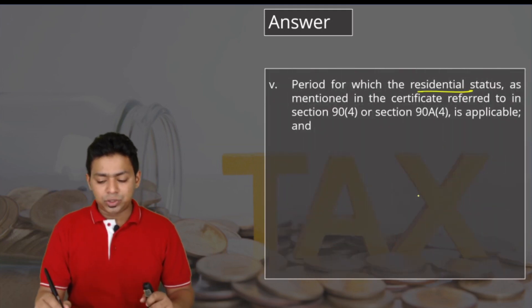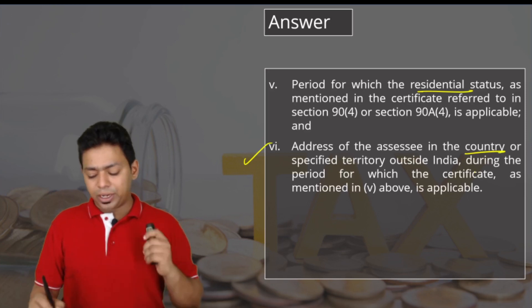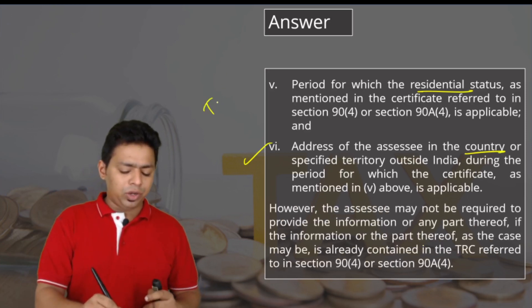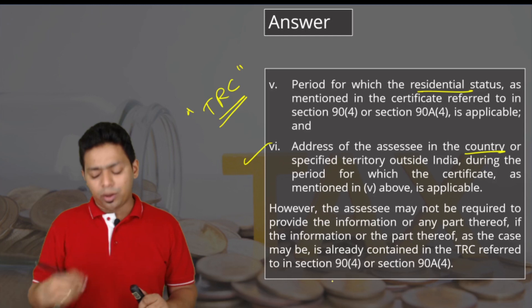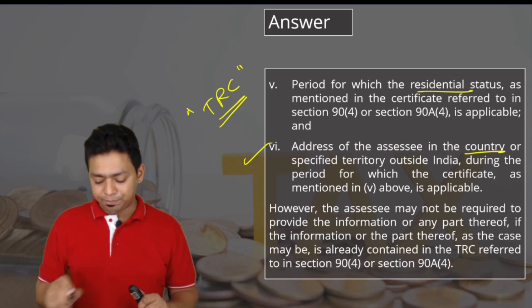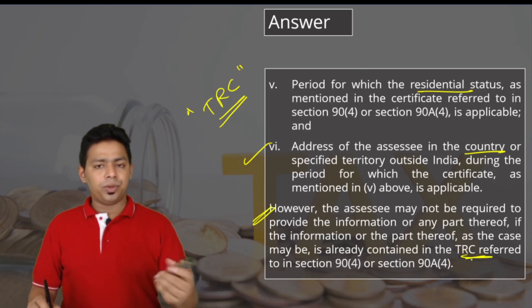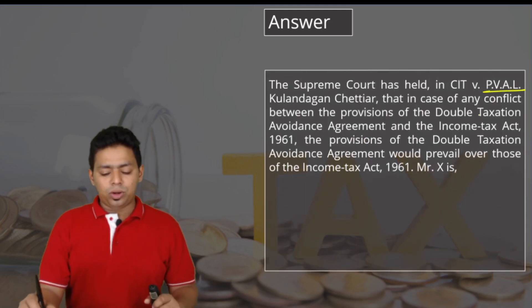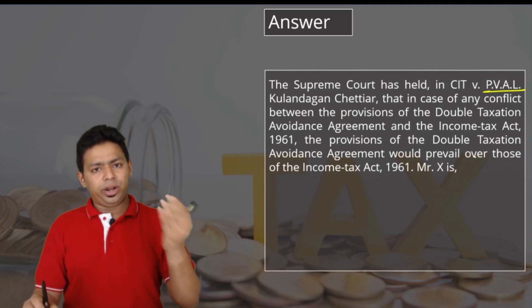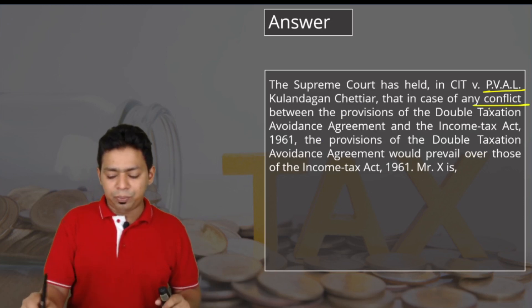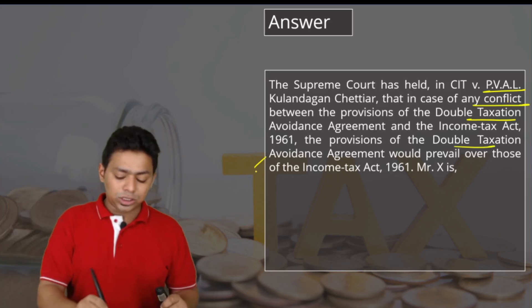Additionally, Form 10F requires the period for which residential status is mentioned in the certificate — how many days he stayed in that country — and the address of the assessee in that country. If you ask why this additional information is needed when a TRC has already been provided, the answer is that this information is required only if it is not already mentioned in the TRC. If all this information is already mentioned in the TRC, you do not have to provide it again. The Supreme Court has also decided that in any conflict between DTAA provisions and the Income Tax Act, DTAA can override the Income Tax Act.